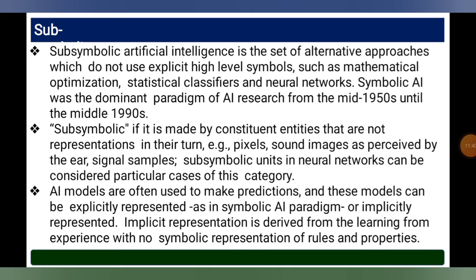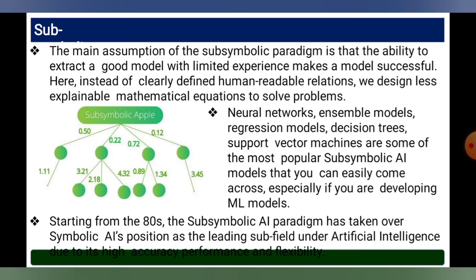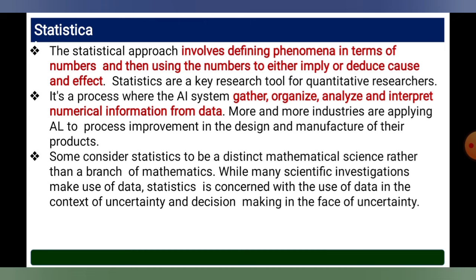Sub-symbolic artificial intelligence is a set of alternative approaches that do not rely on high-level symbols, instead using mathematical optimization, statistical classifiers, and neural networks. Symbolic AI was the dominant paradigm of AI research in the 1950s. Sub-symbolic representation uses precise numerical values — for example, a stem of 0.5 mm length and a root of 0.22 mm diameter — relying on mathematical modeling rather than symbolic labels.